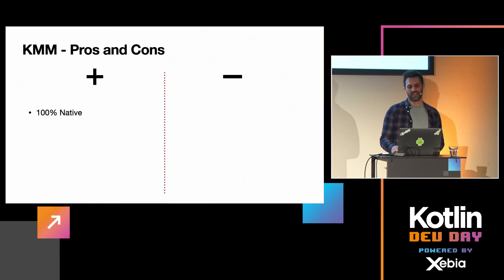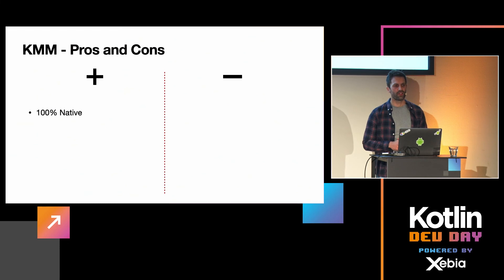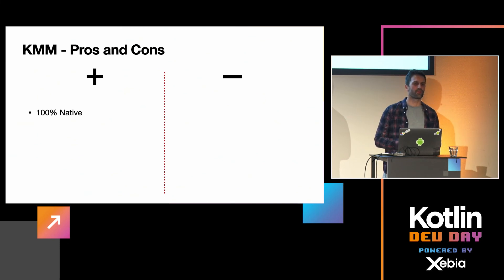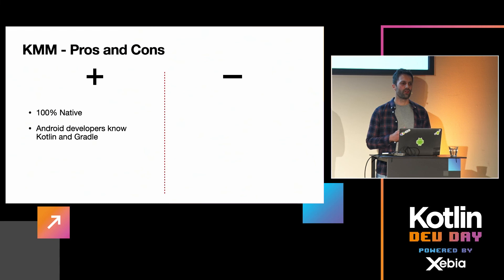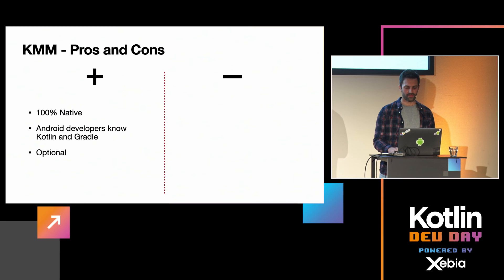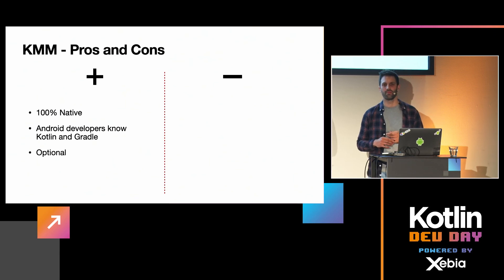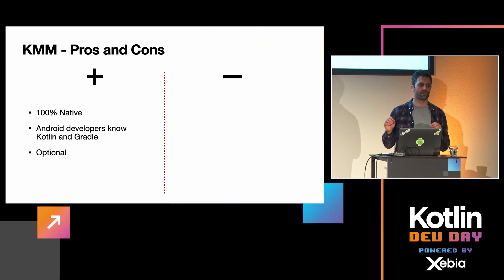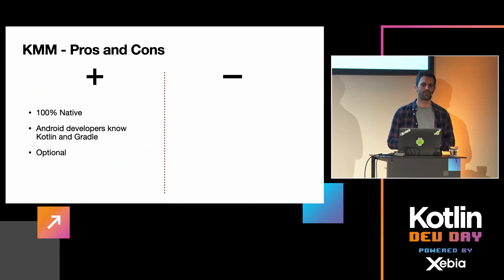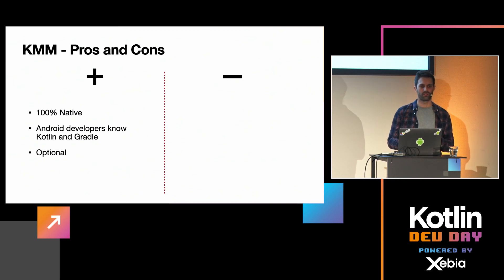Is KMM ready for production? That's a big question — we always need to weigh something that is in alpha against something that may become deprecated. Some pros: it's 100% native, you can still do everything in platform code, and you can share more or less as needed. Android developers already know Kotlin and Gradle — no need to introduce them to Flutter or React Native. And it's optional, which for me is the biggest advantage over any other multi-platform framework. You can start with just resources or a simple network request, one test screen, one feature module — you do not need to rewrite the whole application in KMM. You can really introduce it in baby steps.